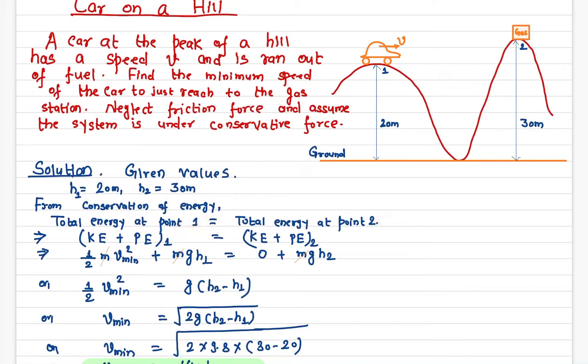The total energy at point one is kinetic energy plus potential energy. At point two, the total energy also includes kinetic energy plus potential energy. The kinetic energy at this point is ½m·v_min².